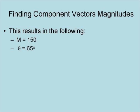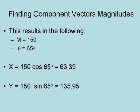Here is another vector with a magnitude of 150 and an angle of 65 degrees. Finding the component vectors of this vector results in m equals 150 and theta equals 55 degrees, where x equals 150 times the cosine of 65 degrees, which equals 63.39, and y equals 150 times the sine of 65 degrees, which equals 135.95.